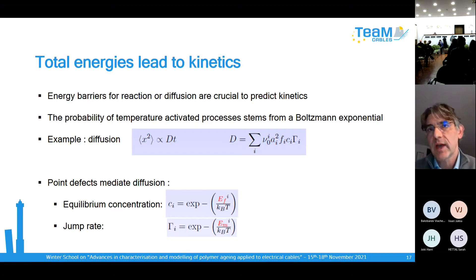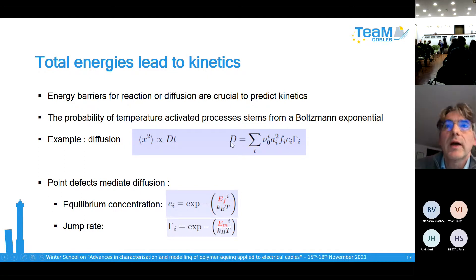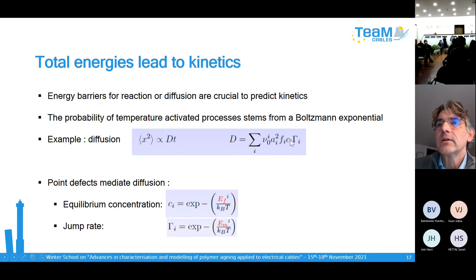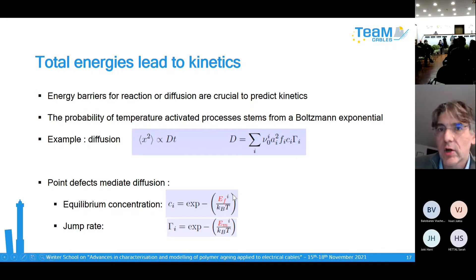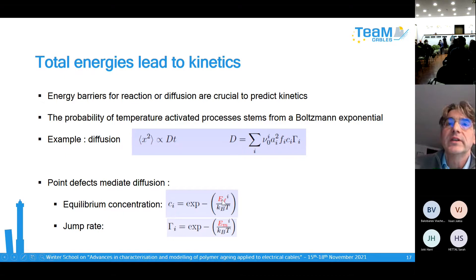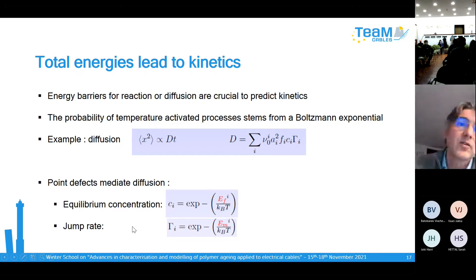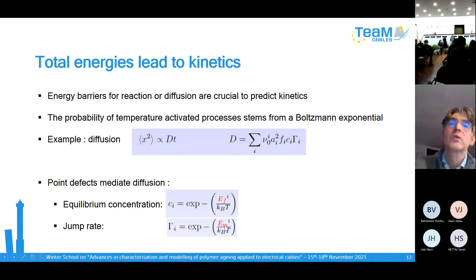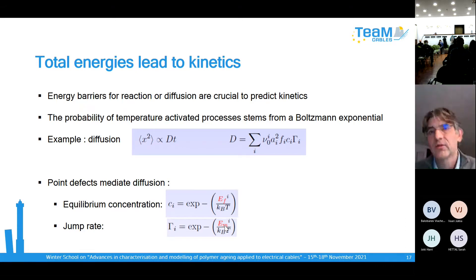From total energy you can calculate energy barriers, which are important for kinetics. A diffusion coefficient can be expressed with geometric parameters plus two important quantities: the concentration of the defect providing mass transport, given by E_f — the formation energy — and the jump rate γ, given by a Boltzmann exponential with the migration energy E_m. The migration energy is something we can calculate on the scale of a few hundred atoms.